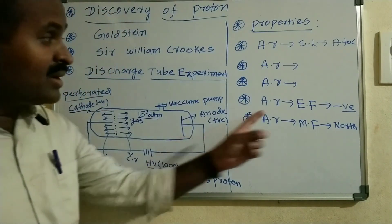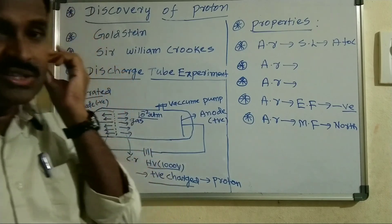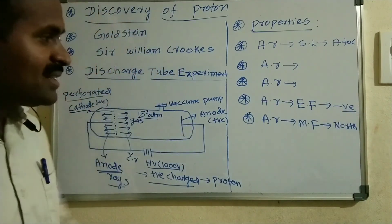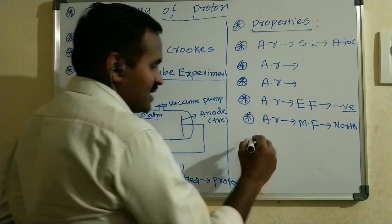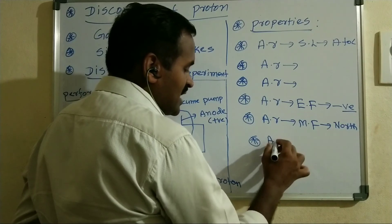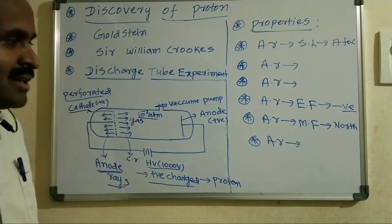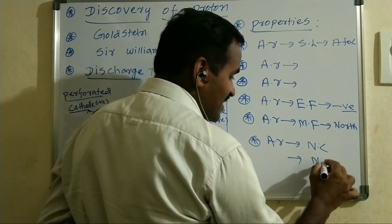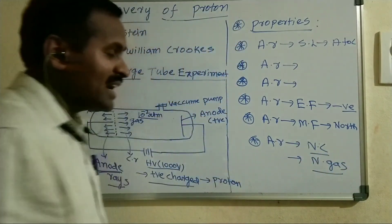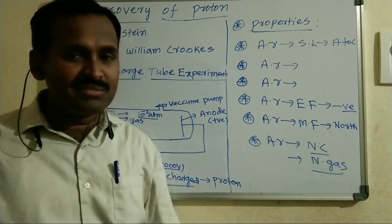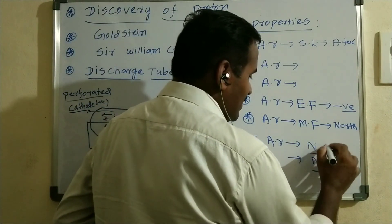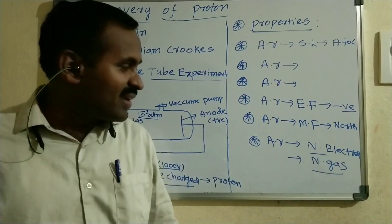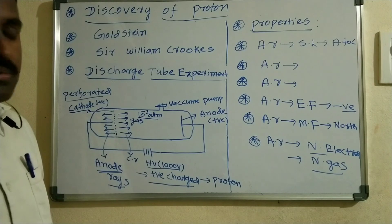So whereas cathode rays deviate towards the south pole in a magnetic field, anode rays deviate towards the north pole. In an electric field, anode rays deflect towards the negatively charged plate. Importantly, anode rays depend upon the nature of the cathode and the nature of the gas taken in the discharge tube, whereas cathode rays are independent of the nature of the electrode or the gas.